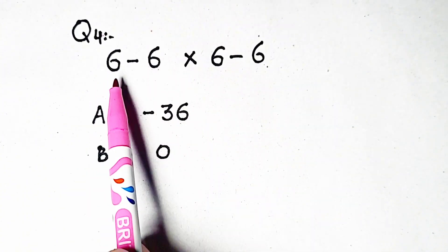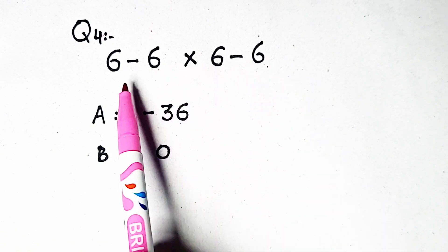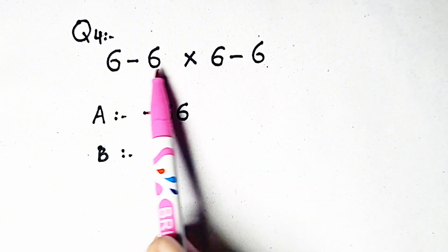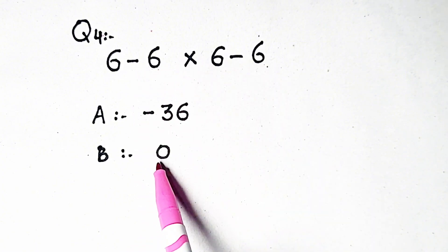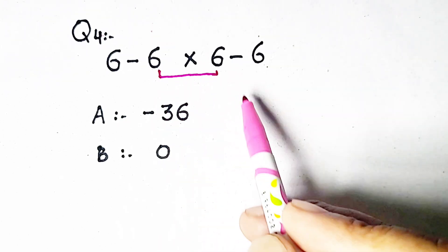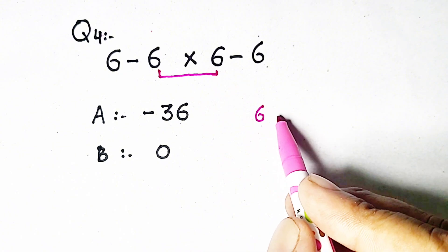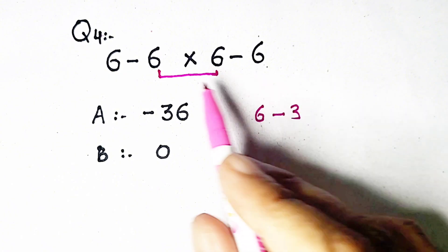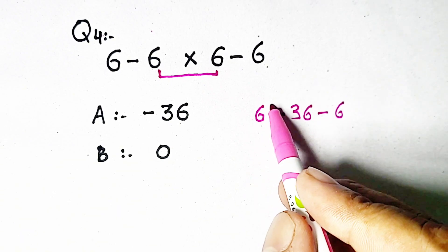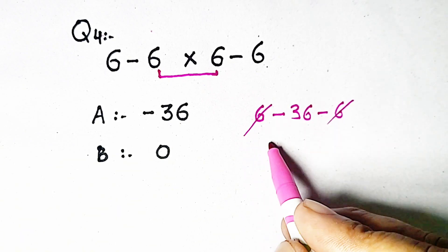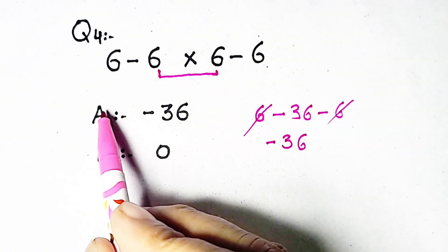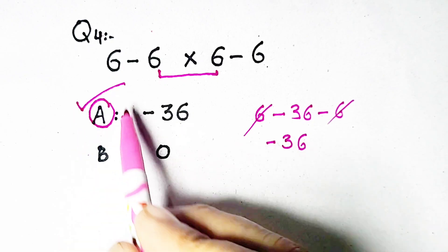Question 4: 6 minus 6 times 6 minus 6. A common mistake is treating 6 minus 6 as 0 twice, giving 0 times 0 equals 0, but that is wrong. First multiply: 6 times 6 equals 36, giving 6 minus 36 minus 6. The positive 6 and negative 6 cancel, so our answer is minus 36. Option E is correct.